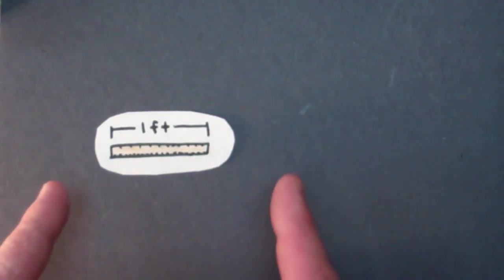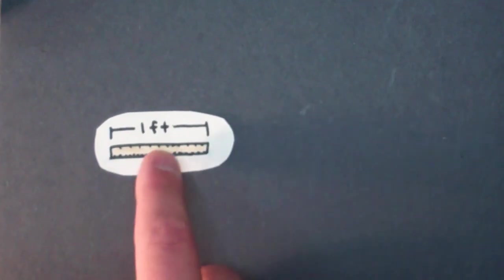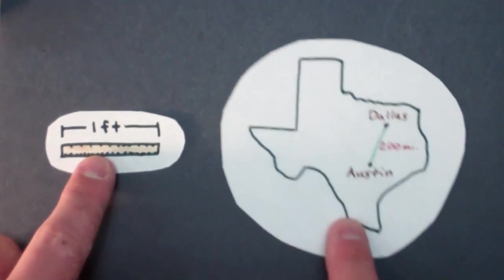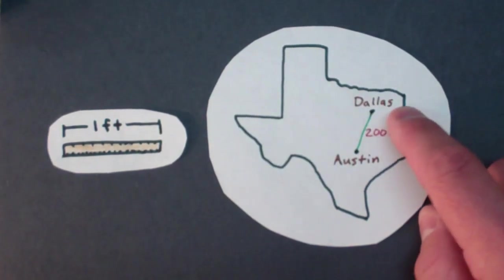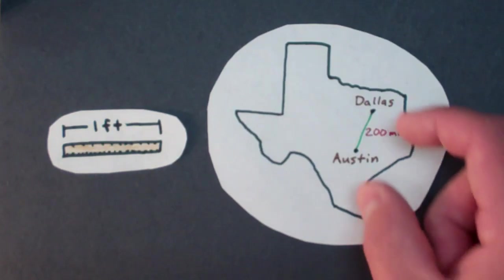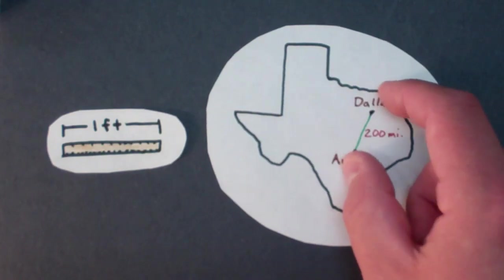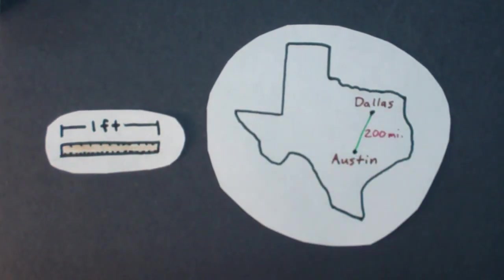Moving on to how you would use segment in the real world. Well that's where rulers come in. Rulers are used to measure the distance between two points. And so rulers are where segments come in handy. And then also let's say we have an end point in here. We have Dallas as an end point. We have Austin as an end point. Well we can measure the distance between those two points and it's about 200 miles. So these are examples of how you would use segments in the real world.